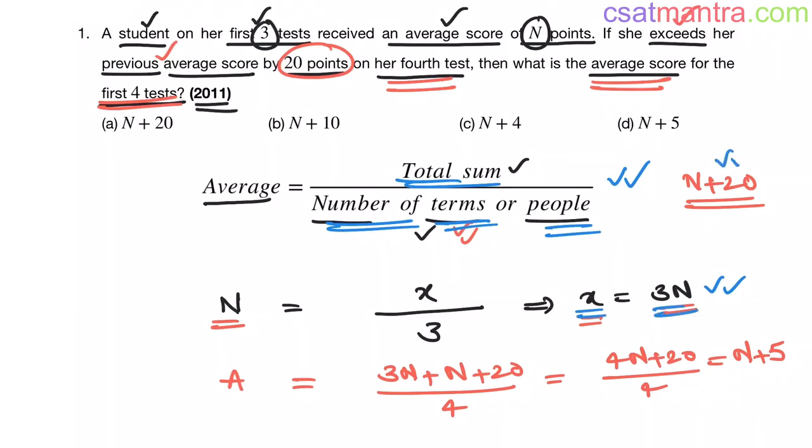In fourth test it is N plus 20. Now this total sum by number of tests, 4. So this is N plus 5. Clear, right?